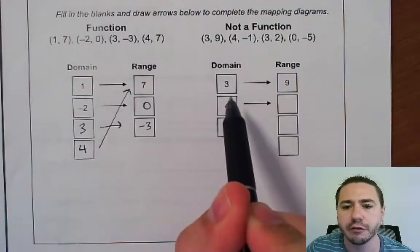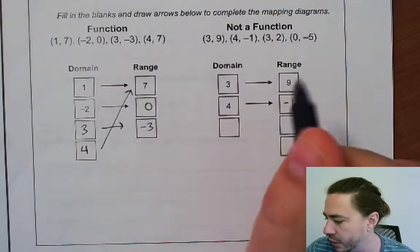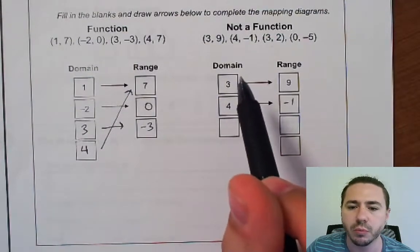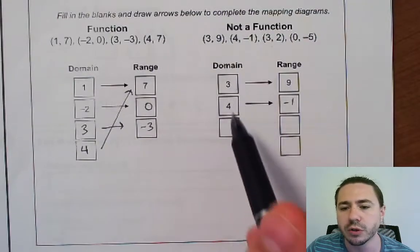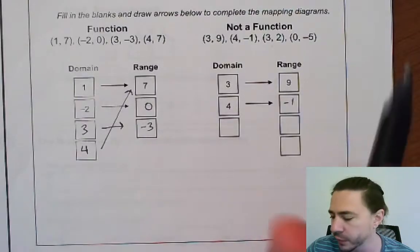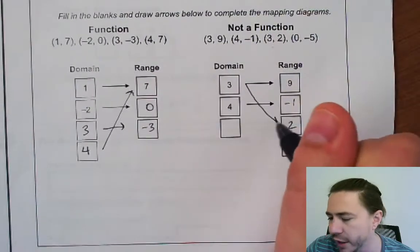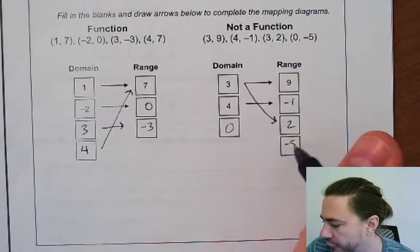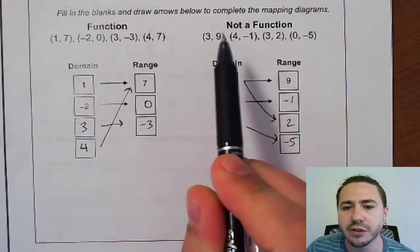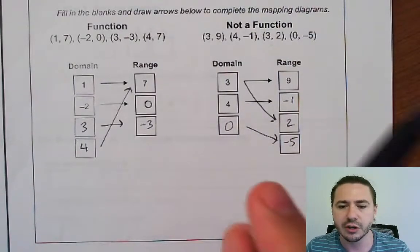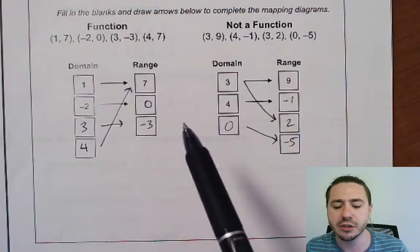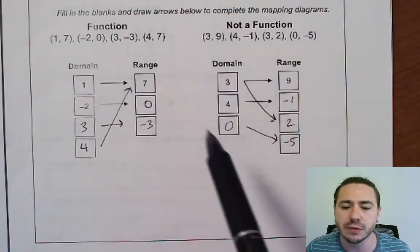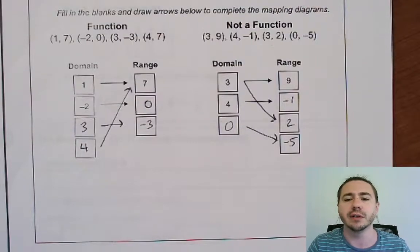In this other example, 3 goes to 9, 4 goes to negative 1, and 3 also goes to 2. When you create a mapping diagram, you don't write any number more than once — you just draw two arrows from it. So 3 goes to both 9 and 2, and you can see right away that's what breaks this relationship — it's not going to be a function. We also have 0 going to negative 5. The value 3 has two different outputs, which is what makes this not a function. So if we could write an equation for these two situations, we could use function notation for the first one but not this one. To use function notation, it's got to be a function.